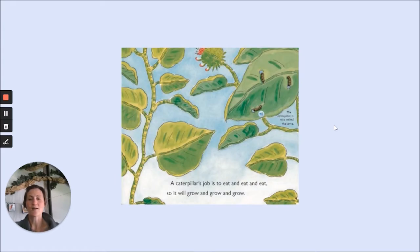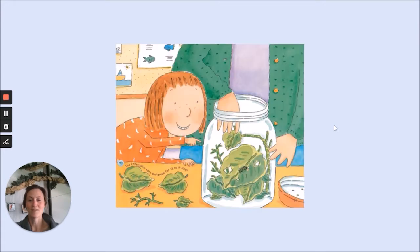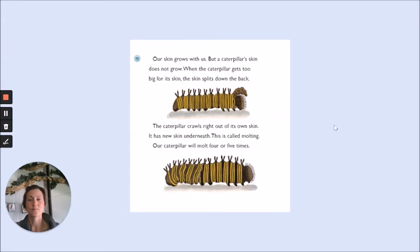A caterpillar's job is to eat and eat and eat, so it will grow and grow and grow. Each day when we come to school, we look at our caterpillar. Each day it is bigger. The caterpillar eats and grows for 12 to 14 days. Our skin grows with us, but a caterpillar's skin does not grow. When the caterpillar gets too big for its skin, the skin splits down the back. The caterpillar crawls right out of its own skin — it has new skin underneath. This is called molting. Our caterpillar will molt four or five times.